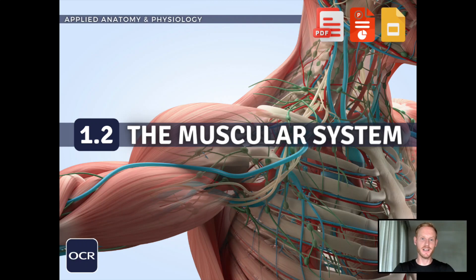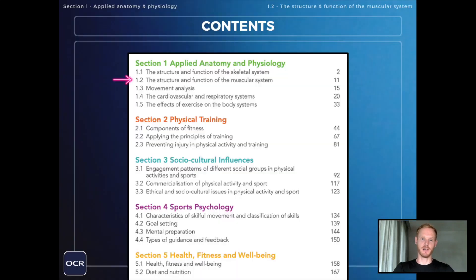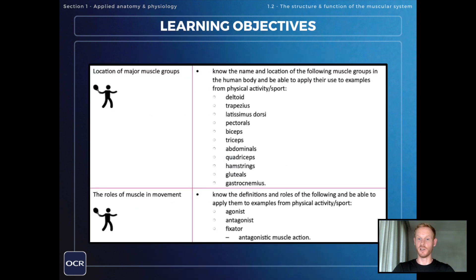Hello and welcome to another complete OCR GCSE PE lesson. In this one we'll be covering absolutely everything you need to know on the first learning objective for topic 1.2 on the structure and function of the muscular system, which is to know the name and location of the major muscle groups in the human body and to be able to apply their use to examples from physical activity or sport.